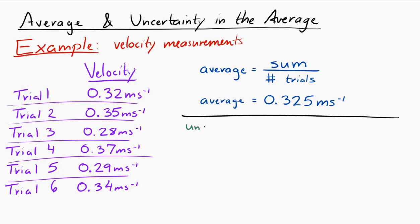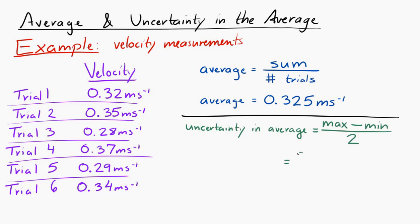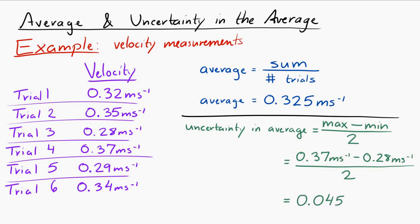Now, the uncertainty in that average — you take the maximum value that you averaged minus the minimum value that you averaged and divide by two. That will give you the uncertainty in the average. If you do that for this data, you get 0.045 meters per second. That is the uncertainty.